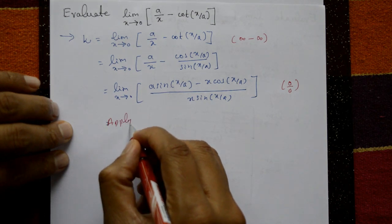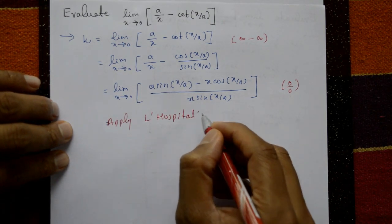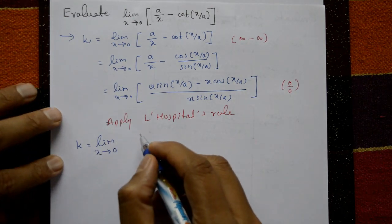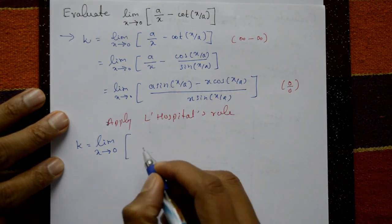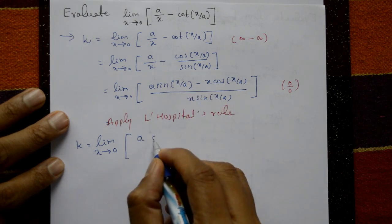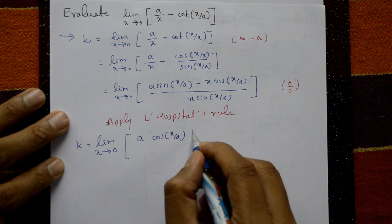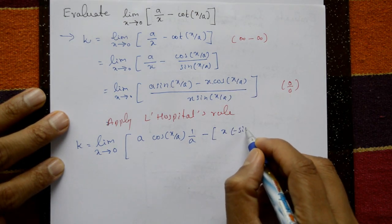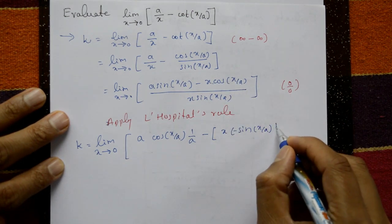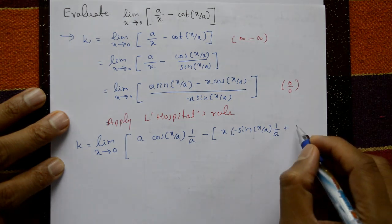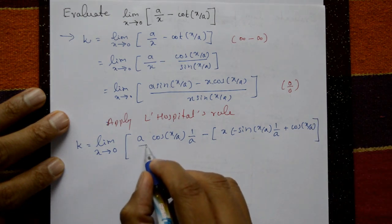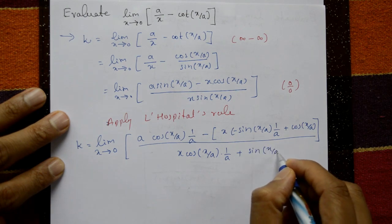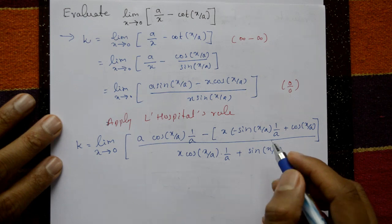Applying L'Hôpital's rule, differentiate the numerator: derivative of a·sin(x/a) is a·cos(x/a)·(1/a) = cos(x/a). For the product rule term x·cos(x/a): derivative is cos(x/a) + x·(-sin(x/a))·(1/a). The denominator uses product rule: x·cos(x/a)·(1/a) + sin(x/a). After simplification the cos(x/a) terms cancel.